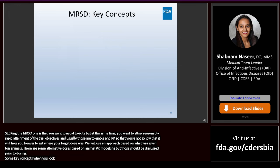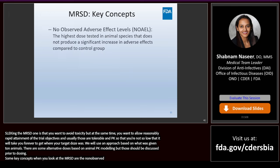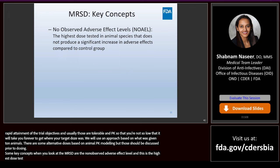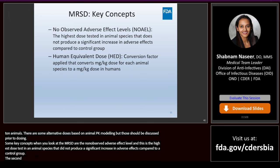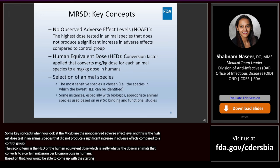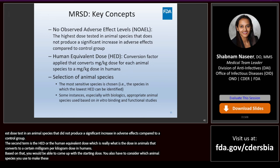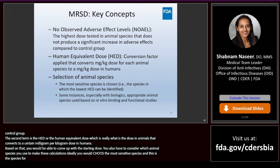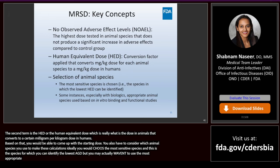Some key concepts when looking at the MRSD: the no observed adverse effect level (NOAEL) is the highest dose tested in an animal species that did not produce a significant increase in adverse effects compared to a control group. The second term is the human equivalent dose (HED), which is the dose in animals converted into a milligram-per-kilogram dose in humans. Based on that, you can come up with the starting dose. You also have to consider which animal species to use — ideally the most sensitive species from which you can identify the lowest HED, though sometimes you may want to use the most appropriate species, especially with biologic drugs.